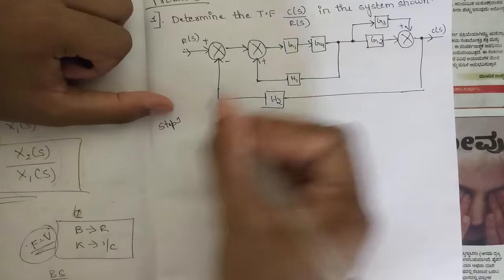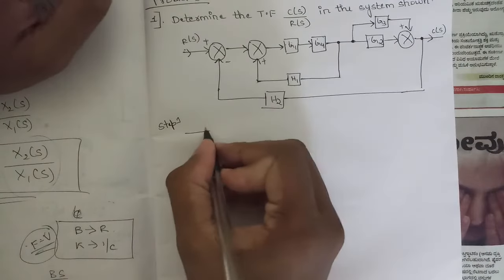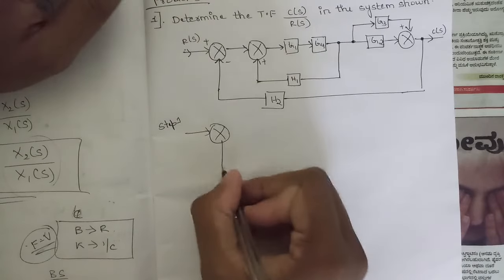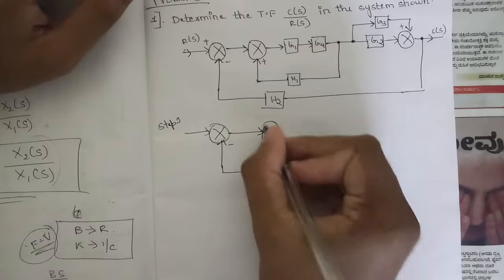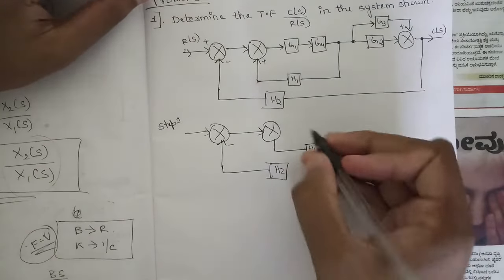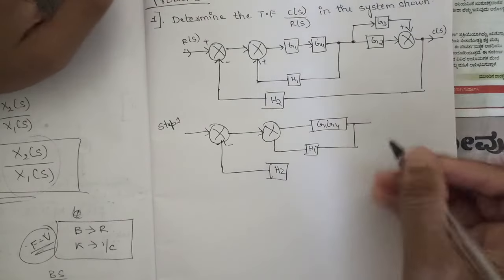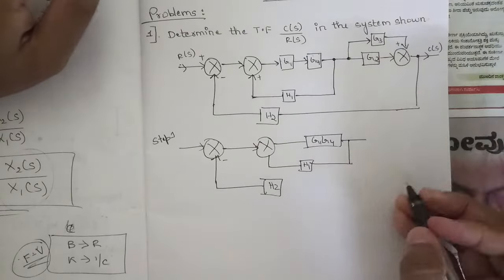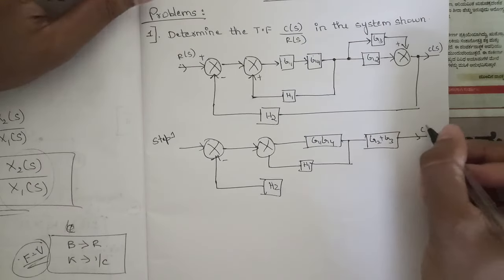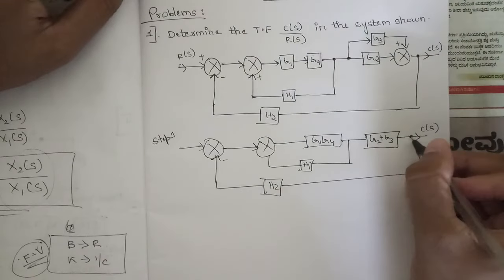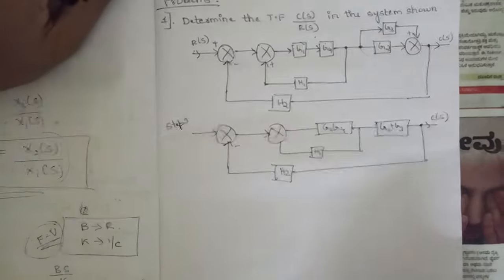So these are the steps. Now let's analyze and solve this problem. Step one: since G1 and G4 are in series, we multiply them; and G2 and G3, we add them. The summing point remains as it is, and the last H2 block remains as it is. So this summing point also remains as it is. H1 stays, G1G4 is the series block, and G2 plus G3 are in parallel to a single summing point — so they get added up as G2 plus G3, giving C(s). H2 is connected here.